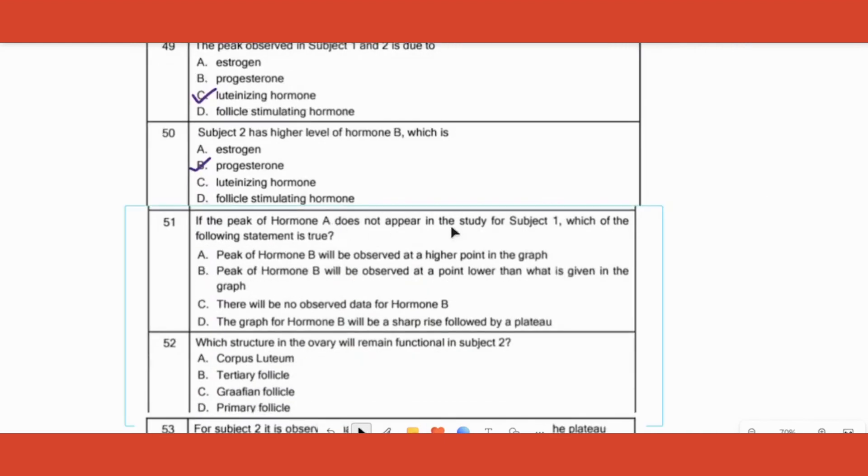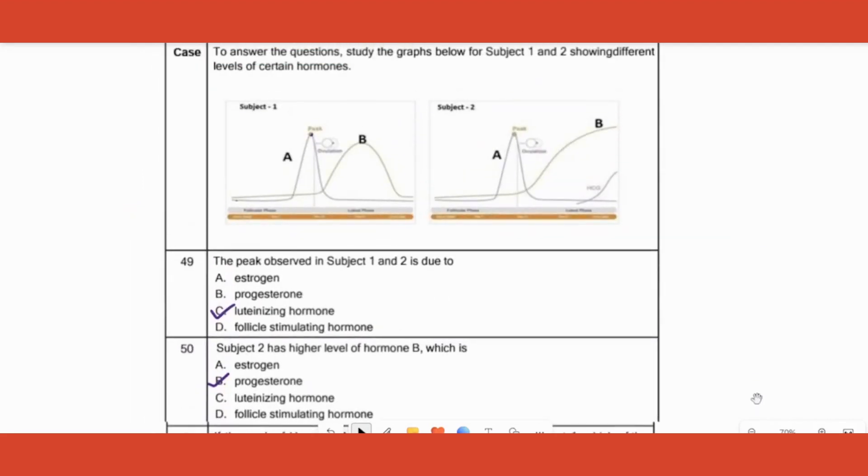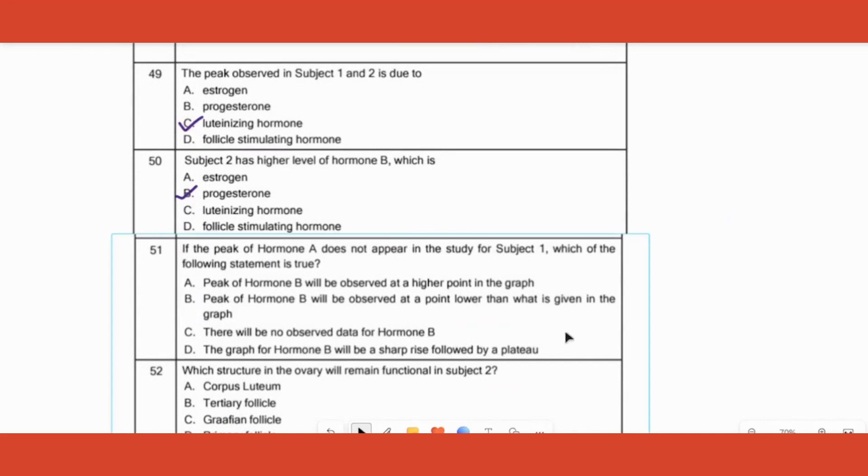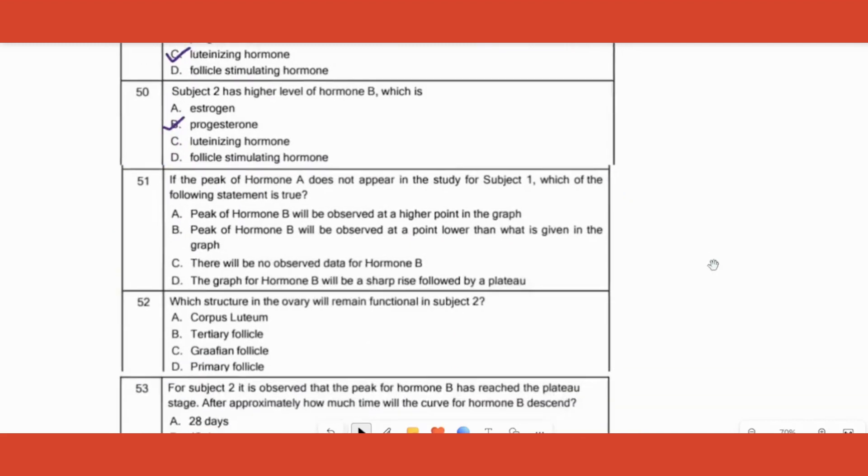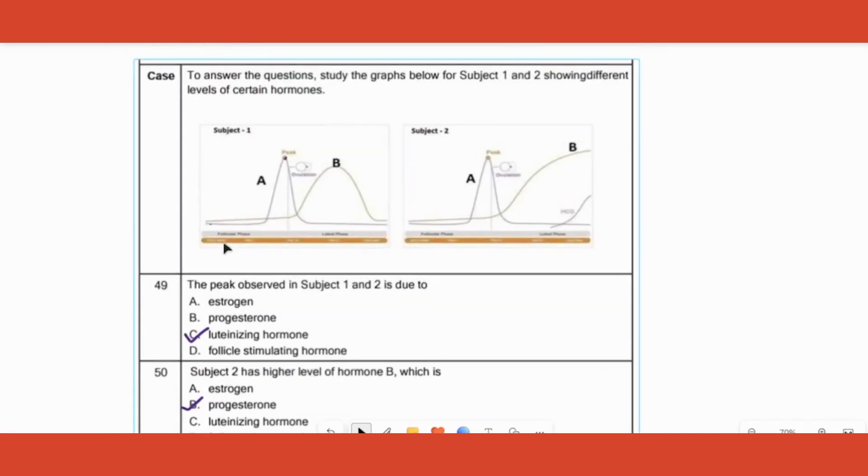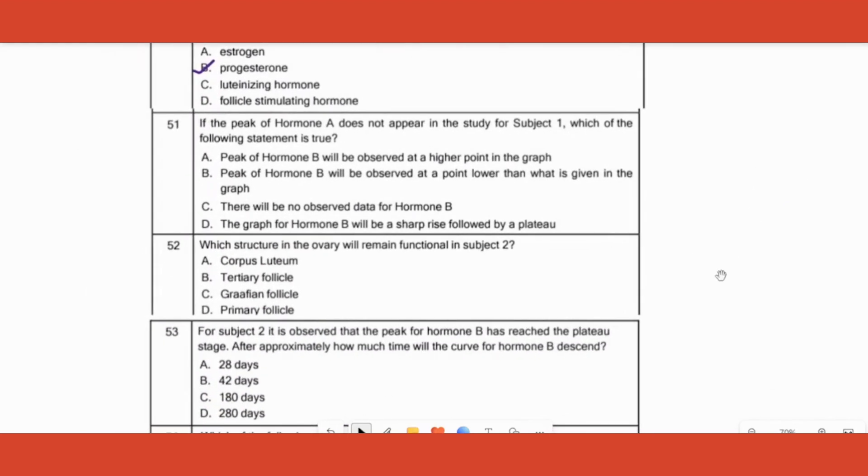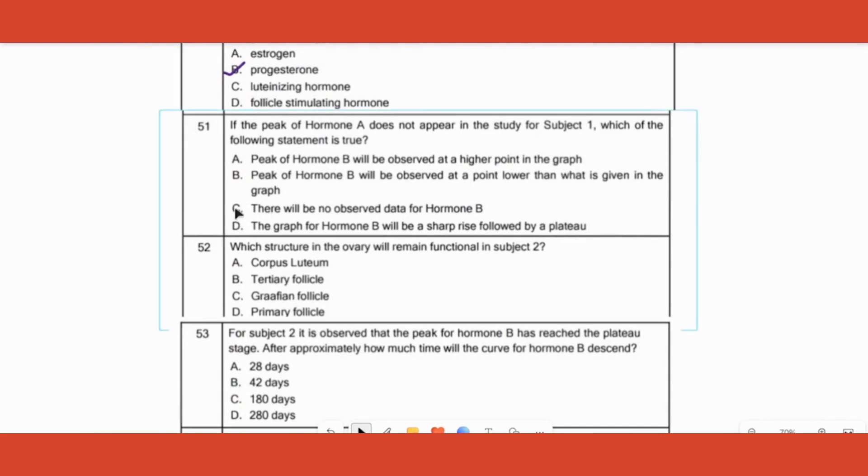Next question: subject 2 has higher level of hormone B. Look at the graph. This B hormone level comes down after the luteal phase. We have discussed about such a hormone which comes down after the luteal phase, and if at all the person gets pregnant, does not come down. Which one is it? Answer is progesterone.